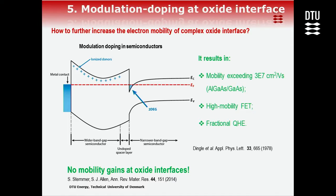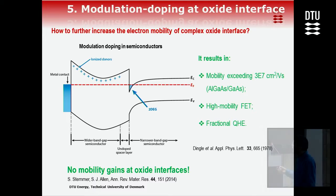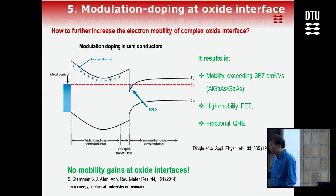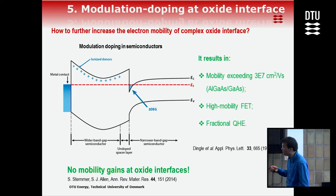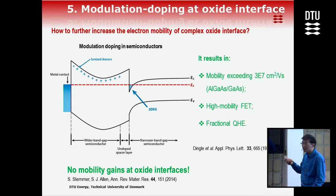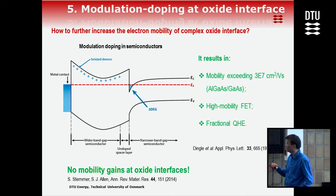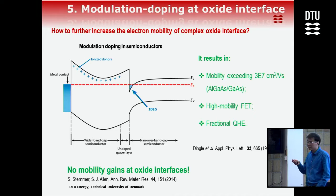We considered whether we can further increase the mobility. The most useful technique used in semiconductors is called modulation doping. This technique increased mobility from a few thousand to 30 million and also led to the realization of the high electron mobility transistor used in smartphones. It also led to the discovery of the fractional quantum Hall effect, which received a Nobel Prize.